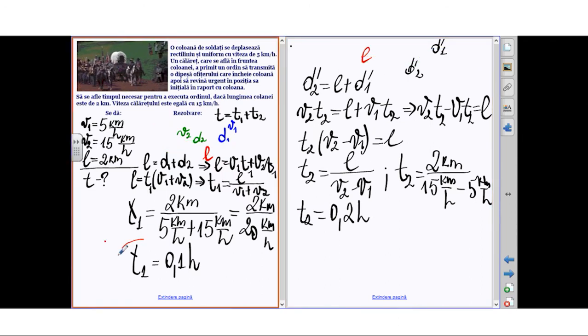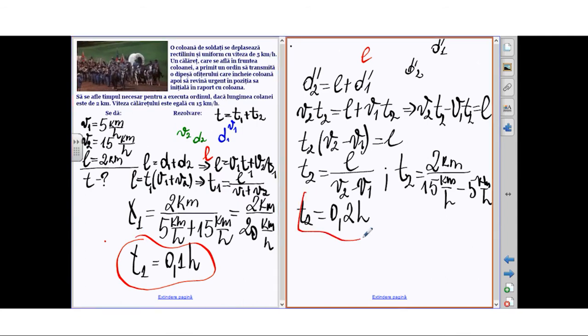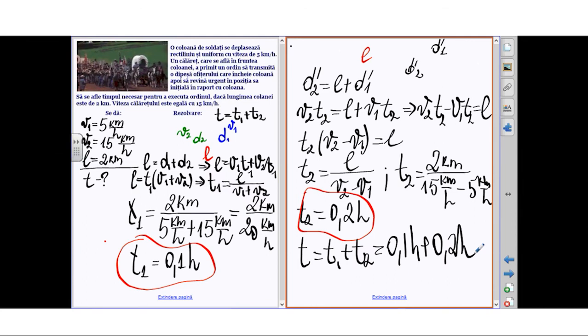Now, knowing the time interval during which the horseman transmitted the message and the time interval to return to his initial position relative to the column, we can determine the total time. The total time equals T1 plus T2, as we wrote earlier. This is 0.1 hours plus 0.2 hours. Finally, the final answer: the total time is exactly 0.3 hours.